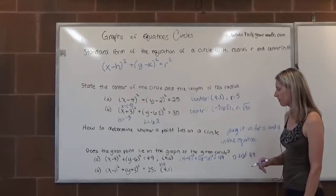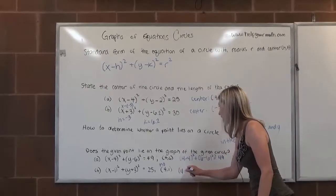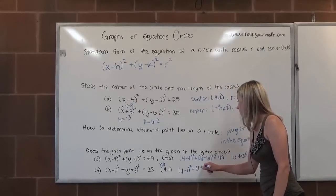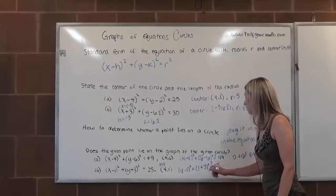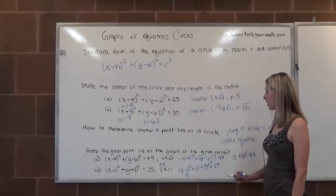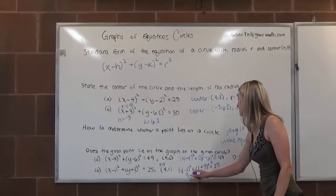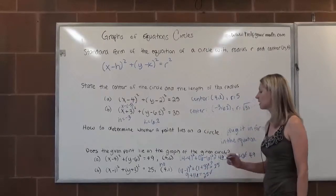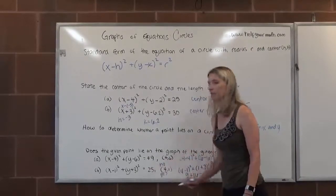For letter B, we're going to plug in 4 for x and 1 for y. We have (4 - 1)² + (1 + 3)². Does that equal 25? 4 minus 1 is 3. 3 squared is 9. 1 plus 3 is 4 and 4 squared is 16. Does 9 plus 16 equal 25? Yes, it does. So that means that (4, 1) is on the circle given by this equation.